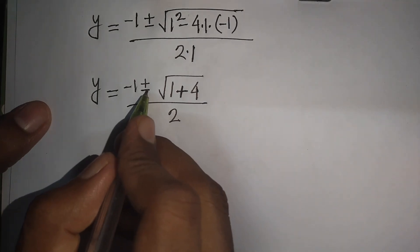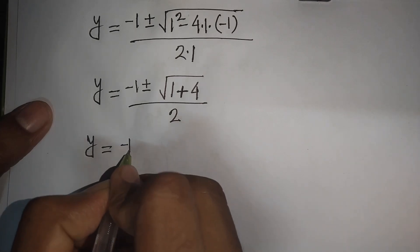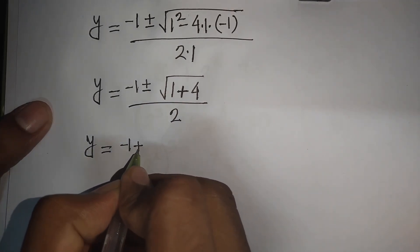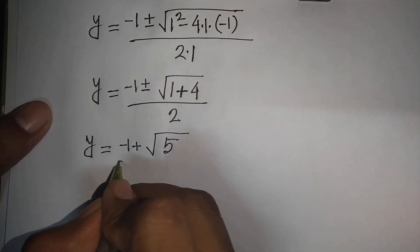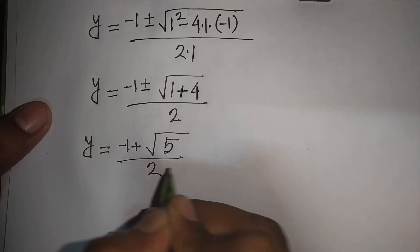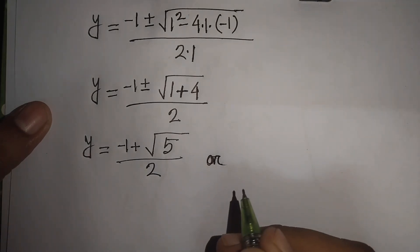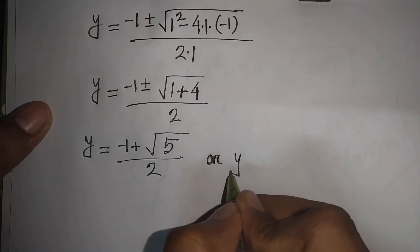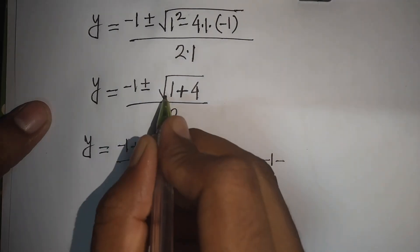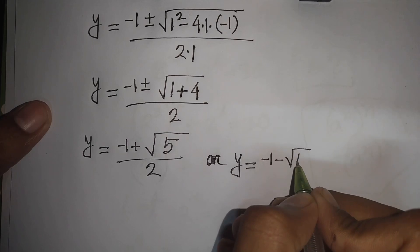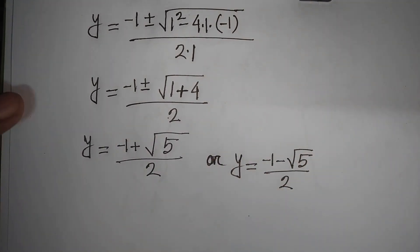This gives two cases: y equals minus 1 plus square root of 5, divided by 2; or y equals minus 1 minus square root of 5, divided by 2.